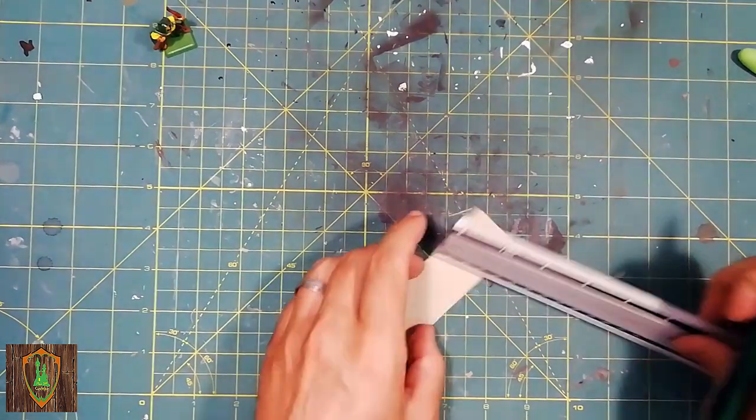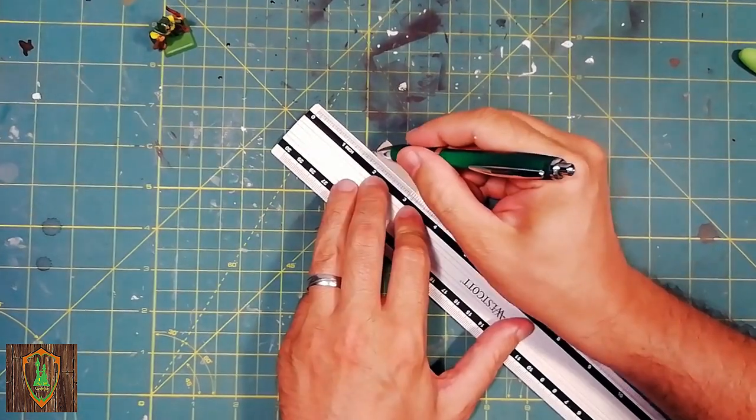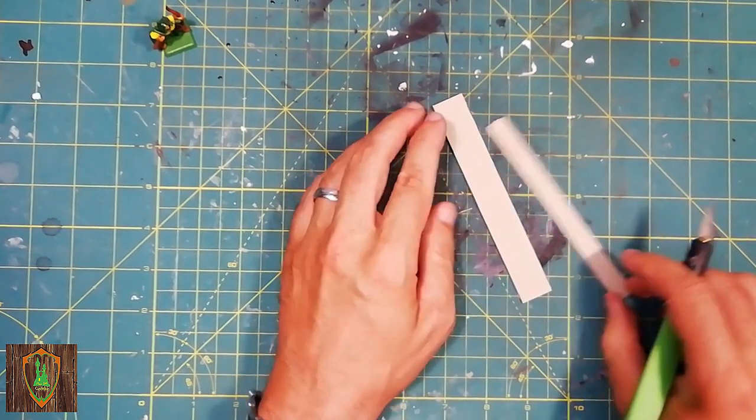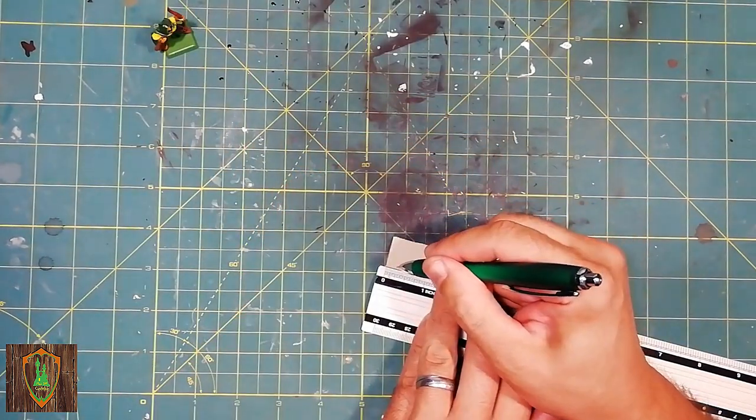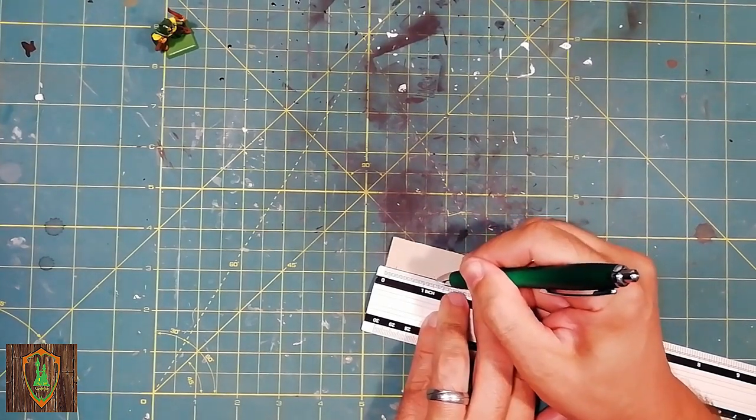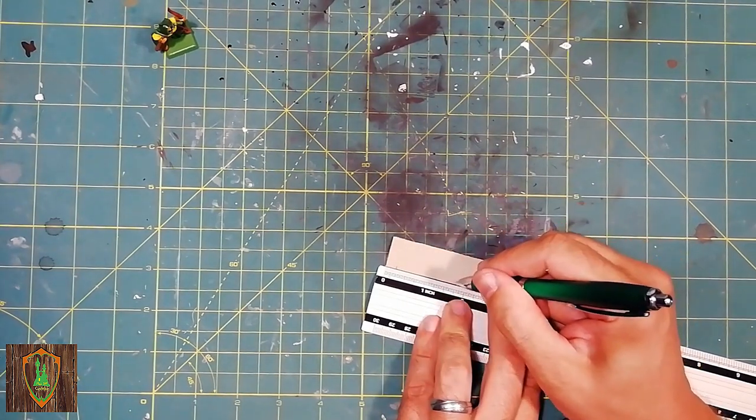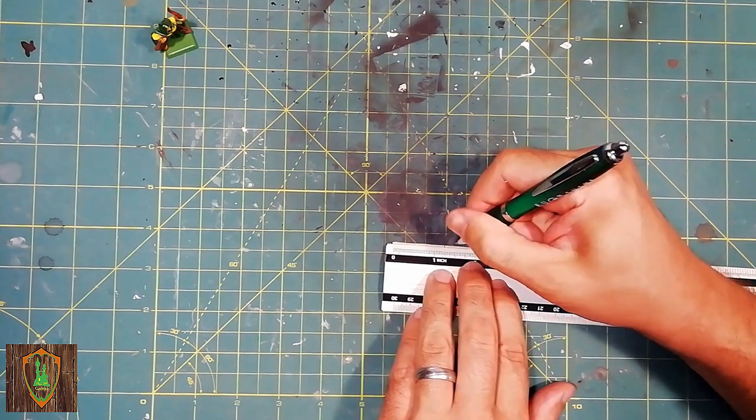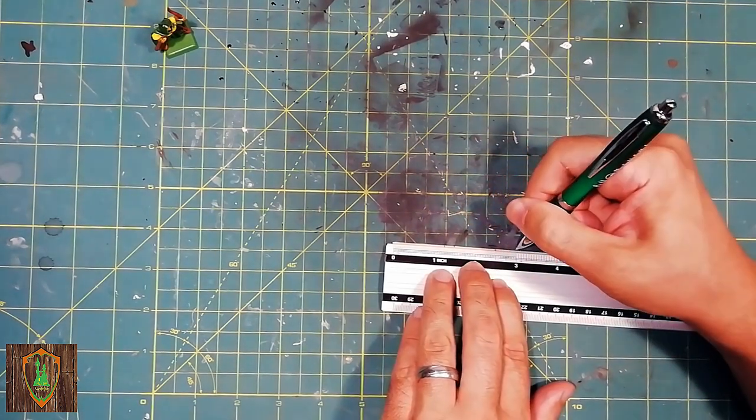For the sides of the cart I started a random series of measurements. The height is three-quarters of an inch, while for the inclination of the extremities I went on by trial and error, finding the ideal inclination at about 30 degrees. But I suggest you look for the shape that best suits you.